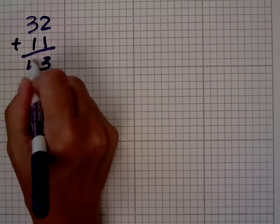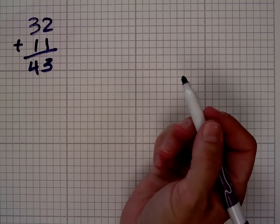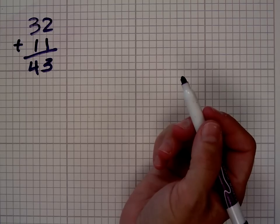32 plus 11 is 43. Can we use the digital root to determine whether that answer is correct or not? And the answer to that is absolutely.